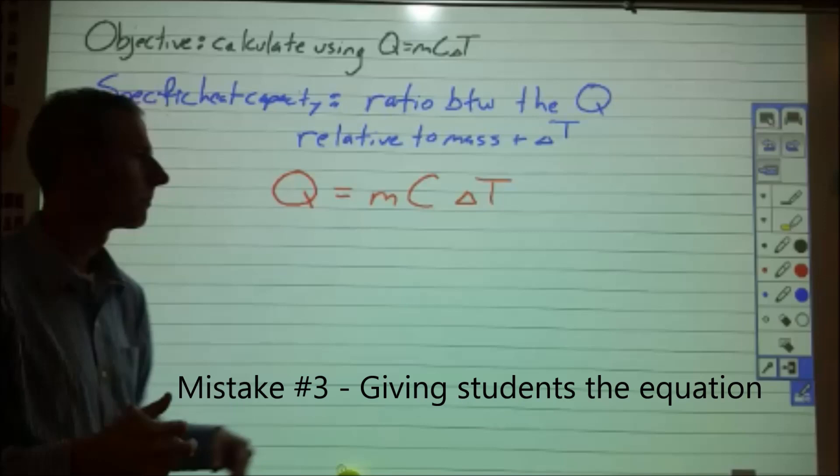Mistake three is giving students the equation at the beginning. They're more than capable of figuring out these types of problems on their own — they don't need an equation to do it. All you need to do is give them units or a constant and let them work and figure out what tools they need. By giving them the answer to start, you're limiting them from doing any thinking on their own, and that's going to make their learning not last as long and not work as well.